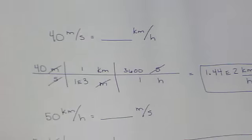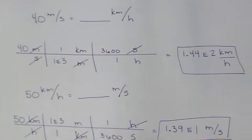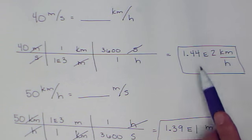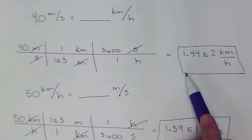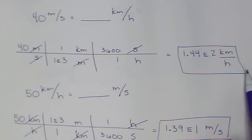Okay, welcome back. First one, you should have got about 144 kilometers per hour. If you're answering in scientific notation, which is what you have to do on the quiz, it would be 1.44 times 10 to the second kilometers per hour.